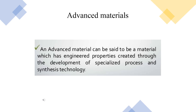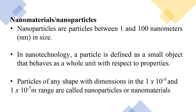Now we will discuss nanomaterials and nanoparticles. Nanomaterials are particles between 1 to 100 nanometers in size. In nanotechnology, a particle is defined as a small object that behaves as a whole unit with respect to its properties.